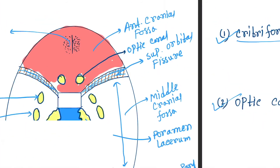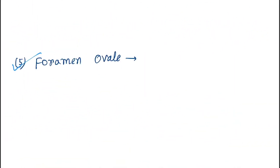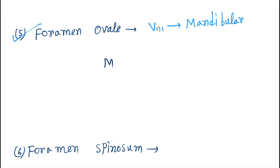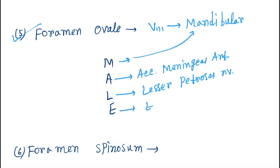Next is the foramen ovale, located below foramen rotundum. The structures passing through foramen ovale can be remembered with the mnemonic MALE: M for Mandibular nerve (third branch of the trigeminal nerve), A for Accessory meningeal artery, L for Lesser petrosal nerve, and E for Emissary vein.